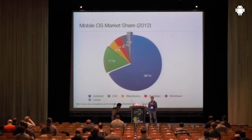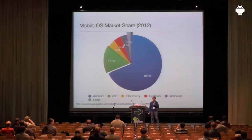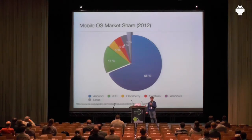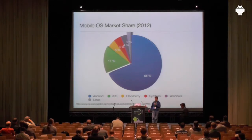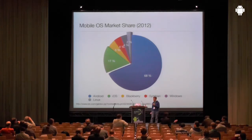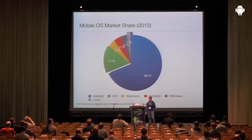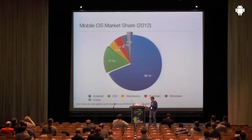Let's first have a look at the mobile OS market share of 2012. It shows that Android devices make up the majority of mobile OS market share — more than two-thirds — followed by iOS with 17%. Then we have the smaller ones like BlackBerry, Windows, and Symbian is still around. Please keep that number of 68% in mind for a couple of slides; I will come back to that.